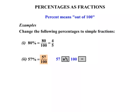Press equals and if you do that, you'll find that nothing happens. It stays as 57 over 100 because it can't be simplified. It can't be broken down. So that is in fact our answer.